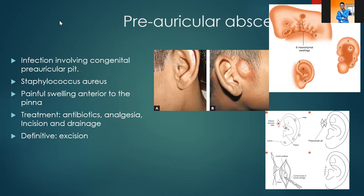Definitive management is excision. Once the infection is settled — maybe two to six weeks later — you go ahead and plan and excise the entire sinus and sac with a rim of cartilage. That is the definitive management of a preauricular sinus. We only manage it if it has been infected, so if a patient has a preauricular pit that is not troubling them, it is best to leave it.